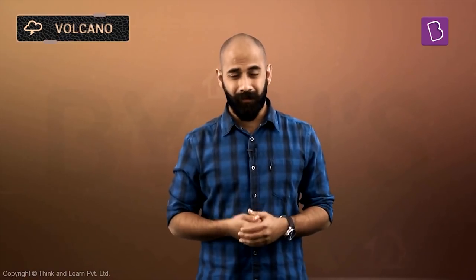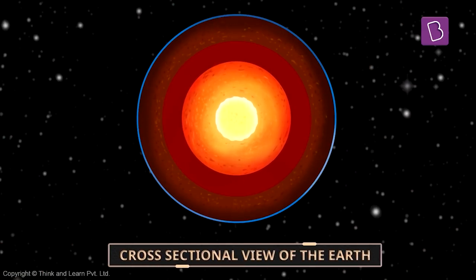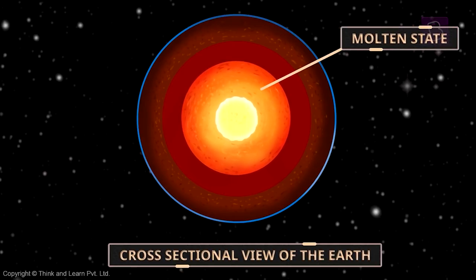Why does the Earth sort of push out such hot and devastating stuff? Well, inside the Earth there's a lot of heat and there's a lot of pressure. Everything that's inside the Earth is all molten because of this heat. All the metals inside are in the liquid state or semi-liquid state because of this heat and pressure.